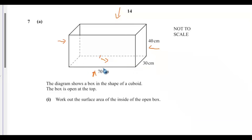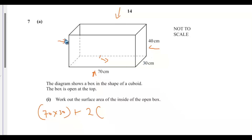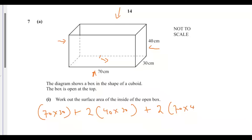For the bottom, the dimension is 70 by 30, so the area will be 70 multiplied by 30. We don't put two here because the top is open. For the two sides, the dimension is 40 by 30, so the area will be 2 multiplied by 40 by 30. Plus the last two — the front and the back — the dimension is 70 by 40, length 70 and height 40, so we have 2 multiplied by 70 by 40.